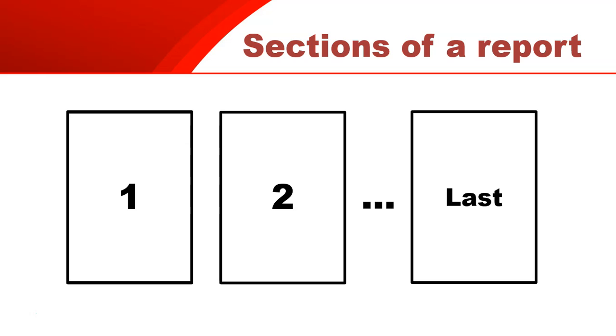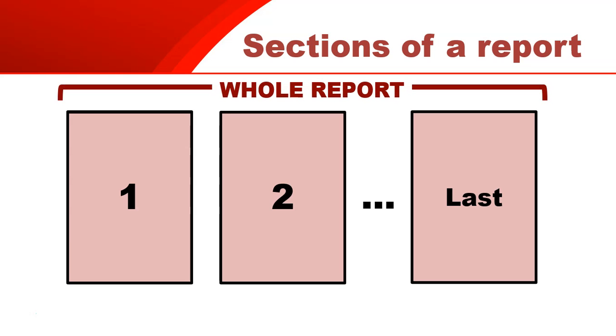Let's first look at the sections. In a report, we know that a report is basically a printed document, so there could be like a page, but a report could probably have lots of pages. There could be page one, a second page, and numerous pages up until the last page. We understand that a report is a bunch of pages, but this whole thing is considered one report. At the very top of the report on the first page, that is the report header — we're looking at this as the whole report.